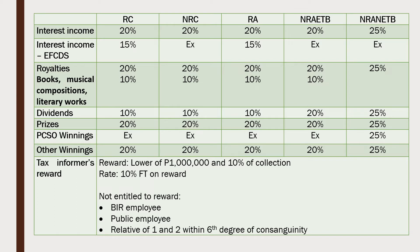However, certain people are not entitled to the tax informer's reward: employees, public employees, and their relatives within the sixth degree of consanguinity.